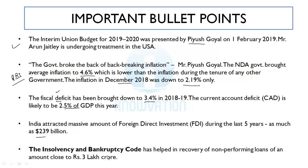The Insolvency and Bankruptcy Code has helped in recovery of non-performing loans of an amount close to Rs. 3 lakh crores. A strong framework of the Insolvency and Bankruptcy Code has helped to recover almost Rs. 3 lakh crores of NPAs. It's quite a big achievement — do remember the figure.